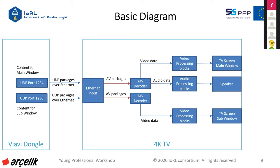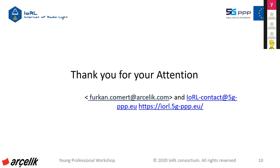Home networks may not be suitable for delivering video packages with very high bit rates in high quality to many devices simultaneously, because of the increase in video content quality and the growing number of smart devices in the home. The Internet of RadioLight project solves this problem, and this will be the future. Thank you for your attention.